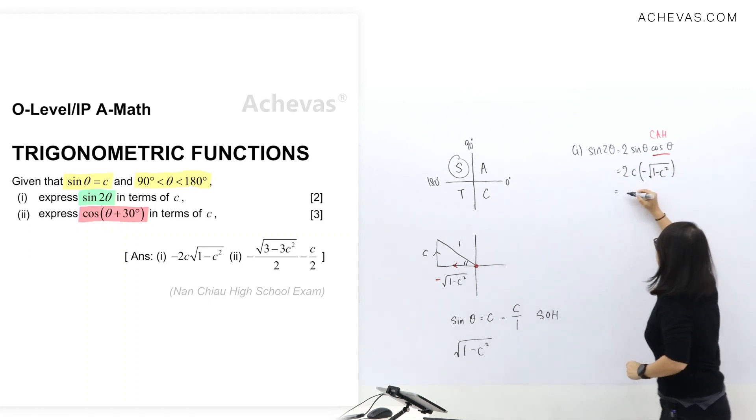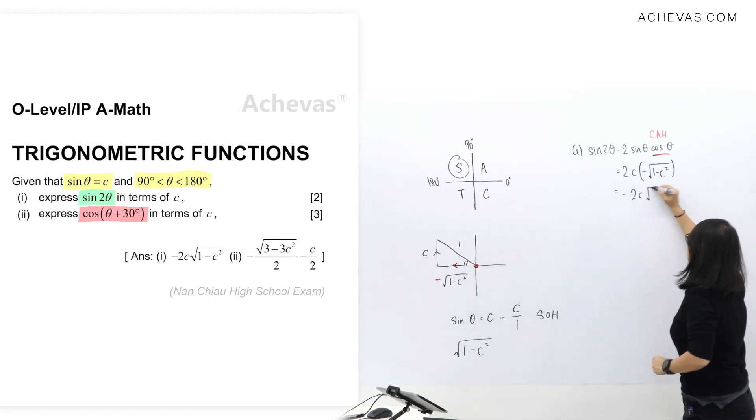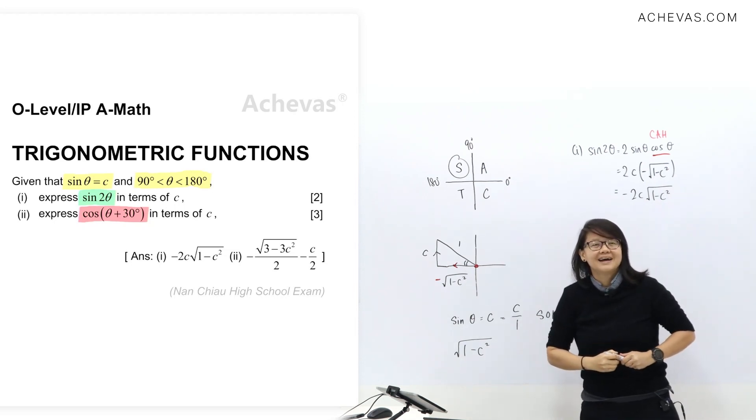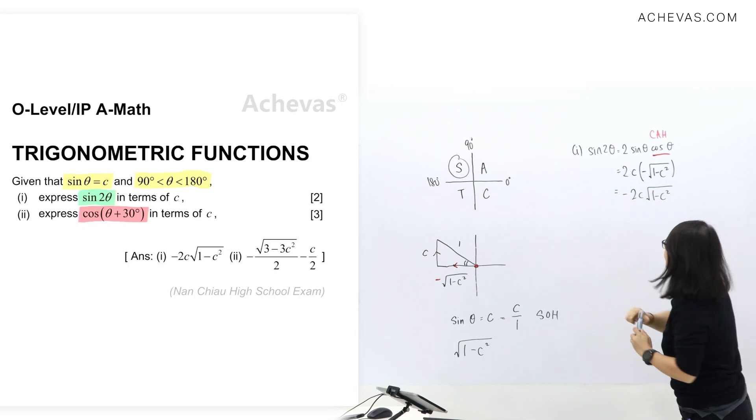And to simplify this one here, I have negative 2c square root of 1 minus c square as my answer for part 1. And next, let's take a look at part 2.